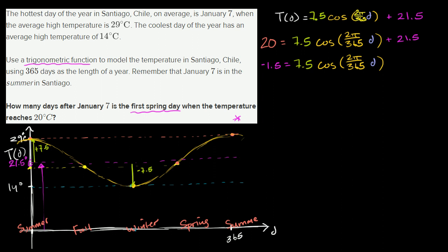Now I could divide both sides by 7.5. Notice I'm trying to solve for cosine and eventually solve for d, but we're going to take a little pause once we have this in terms of cosine. You have to be careful here. So we're going to divide both sides by 7.5. Actually I don't even need a calculator for this. 1.5 divided by 7.5, this is 1 fifth. So this is negative 0.2 is equal to cosine of 2π over 365 times days after January 7th.